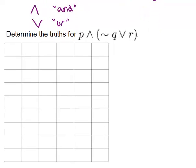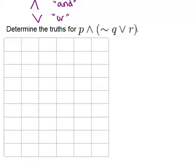So this example will be, determine the truth values for P AND, not Q, or R. So if you want to make a truth table, the first thing you want to do is think about all the variables in your problem, which are P, Q, and R, and start by writing those out along the top.